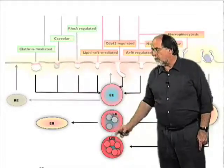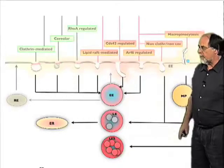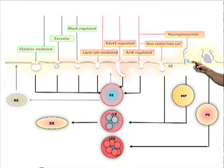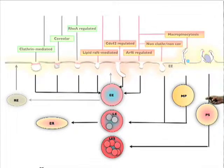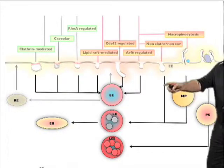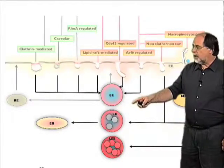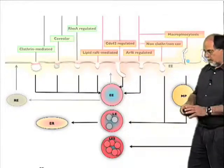Typical cargo moves to late endosomes, which are more acidic, and then for degradation into lysosomes. The pH drops continuously, from about 6.2 in early endosomes to 5.5 and even lower in lysosomes. Macropinocytosis gives rise to a poorly characterized primary vacuole called the macropinosome, and phagocytosis leads to the formation of large phagosomes, which in many cases feed into this central endosomal pathway. One notable route leads from endosomes to the endoplasmic reticulum, which some viruses are known to use.